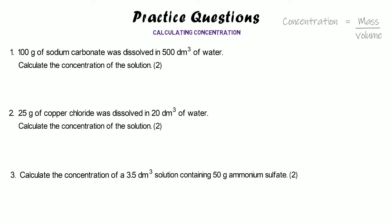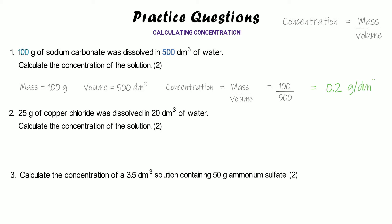For the first question, the mass is 100 grams and the volume is 500 decimetres cubed. Concentration equals mass over volume: 100 divided by 500 equals 0.2 grams per decimetre cubed.